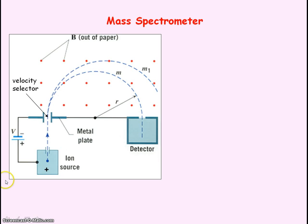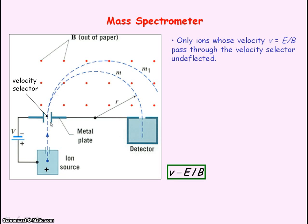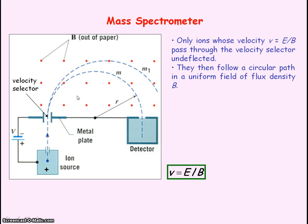A mass spectrometer makes use of electric and magnetic fields to deflect ions — charged particles — in order to identify them and to determine their abundance. In this velocity selector, you have a source emitting ions which are accelerated through a potential difference V into a velocity selector, where only ions with a velocity v that equals E divided by B pass through the velocity selector undeflected. They then enter a uniform magnetic field of flux density B and follow a circular path.